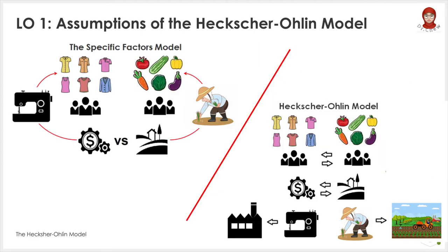Here are two figures to illustrate the differences between the specific factor model and the Heckscher-Ohlin model. Bear in mind, the key difference between both models is the mobility of capital and land in the Heckscher-Ohlin model. These two factors, capital and land, are no longer specific only to one production of goods.